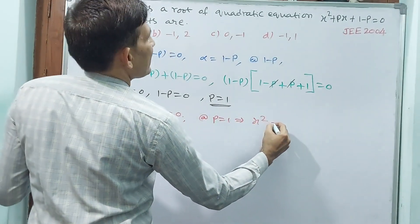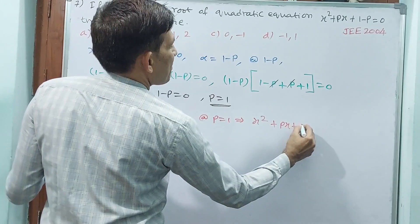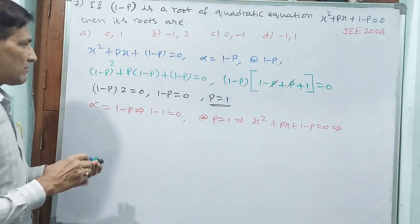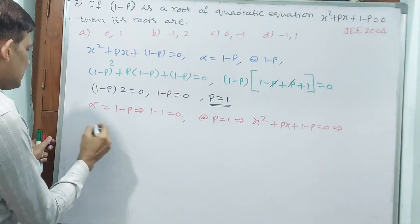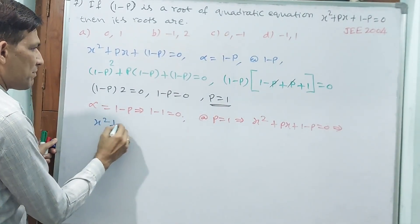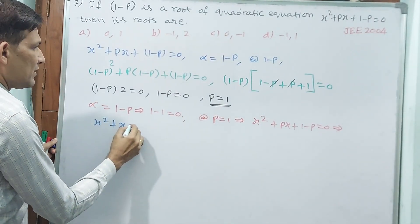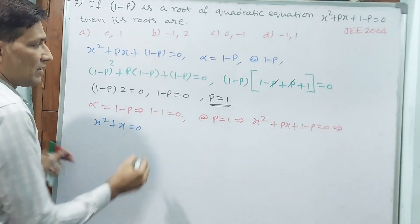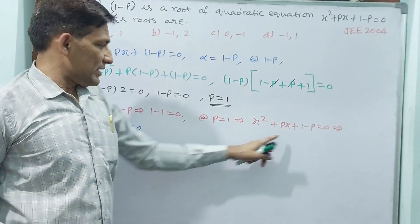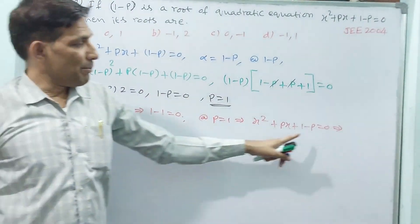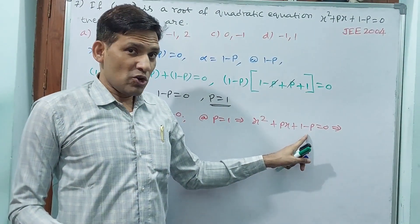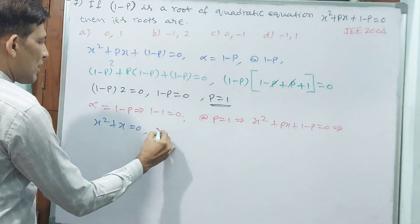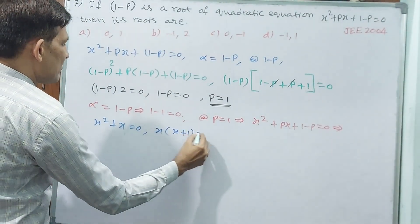To find the other root, substitute p = 1 into the equation: x² + px + (1-p) = 0 becomes x² + x + 0 = 0, i.e., x² + x = 0. Since p=1, 1×x = x, and 1-1 = 0, so that term vanishes. Taking x as common: x(x+1) = 0.